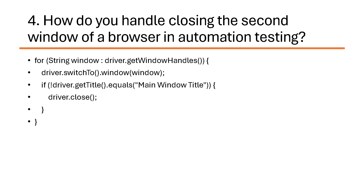To explain the flow: first, store the main window handle. Then trigger an action that opens the second window. Get all window handles using `getWindowHandles()`. Loop through them and switch to the second window. Then use `driver.close()` to close the second window, and then switch back to the main window. This is the flow you can explain to your interviewer if they don't ask you to write the program.